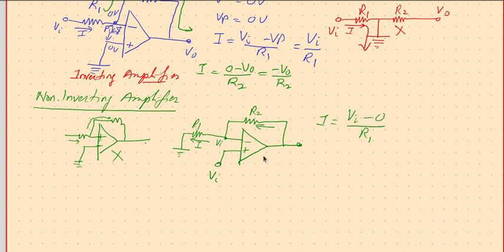And the same current will flow, V0 minus VI. This point voltage is not zero now, so V0 minus VI by R2. When you say that the same current is flowing, because no current can enter into the operational amplifier and because of the virtual short this VI will be appearing here and this VI will create this current.